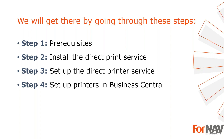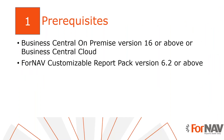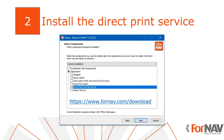Today I will be printing reports in the Business Central cloud tenant with the Business Central 2023 Wave 2 release. I've installed the ForNav customizable report pack and executed the step-by-step wizard from the assisted setup to get started. ForNav direct print is available in Business Central on-premise and cloud from version 16 and up. You need at least ForNav version 6.2, and we advise you to always use the latest version.